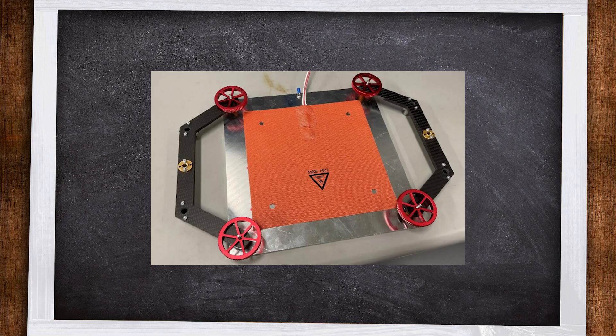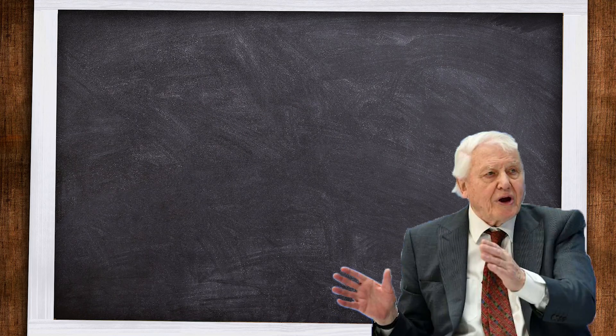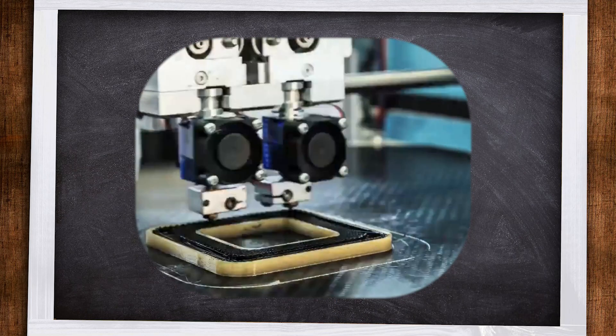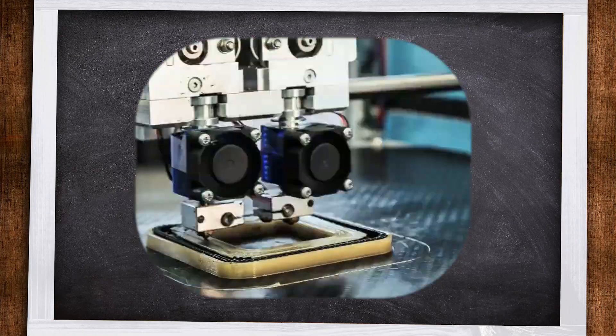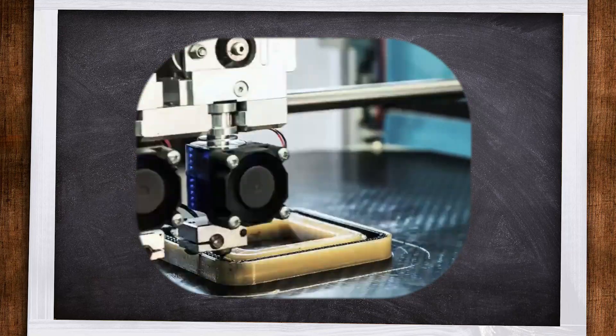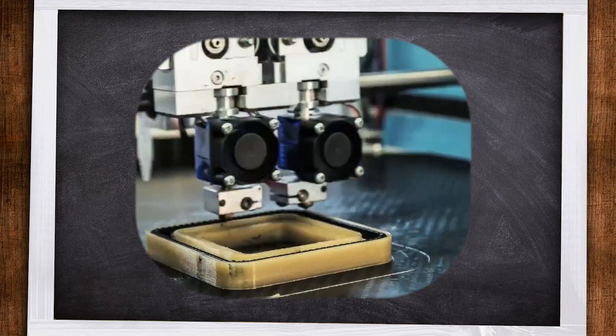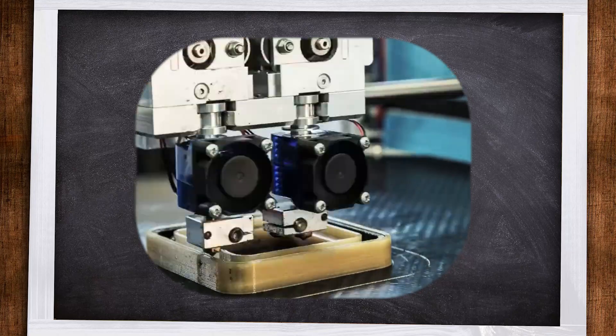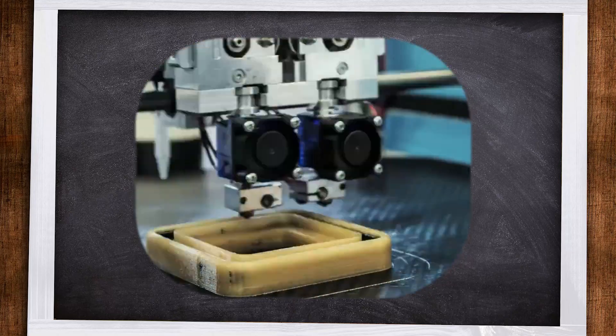Once the fibre is laid on the print bed, it partially cures as a result of the intense local heat from the ceramic heaters as well as the silicone heating pad. This partial cure allows the resin to harden so that a solid 3D part can be created layer by layer.